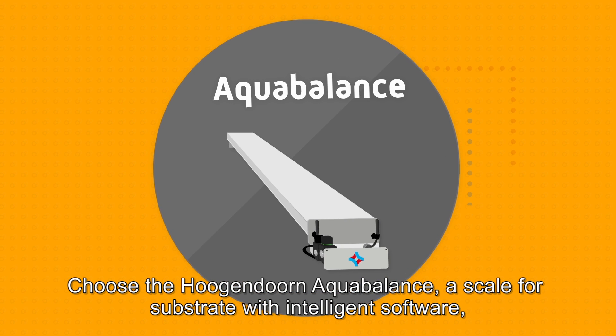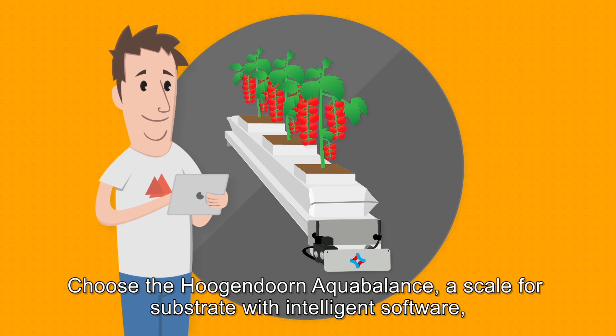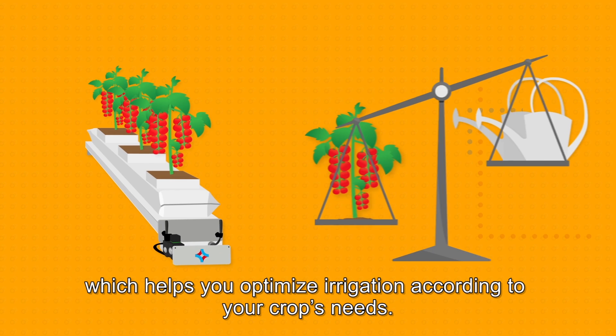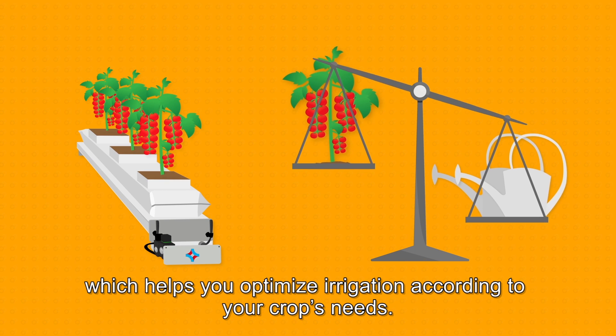Choose the Hogan Dawn Aqua Balance, a scale for substrate with intelligent software, which helps you optimize irrigation according to your crop's needs.